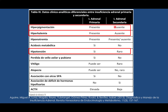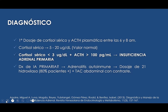Los síntomas en general son inespecíficos, y se puede presentar de manera insidiosa hasta un año antes del diagnóstico en el 50% de los pacientes. La hiperpigmentación de las mucosas es característica de la insuficiencia adrenal primaria. La diferencia entre la primaria y la secundaria es un punto importante. Para hacer el diagnóstico hay que dosar el cortisol, que va a estar muy disminuido. El cortisol sérico está disminuido — menos de 3 microgramos por decilitro — más una ACTH elevada, y estaremos en el diagnóstico de insuficiencia adrenal primaria.